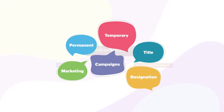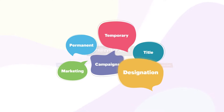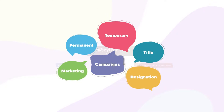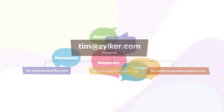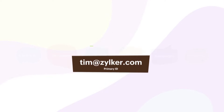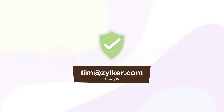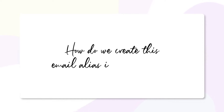Whether it's permanent or temporary usage, title or designation based, campaigns or marketing activities — email aliases are your go-to email addresses to protect the privacy of your primary accounts. So how do we create an email alias in Zoho Mail?